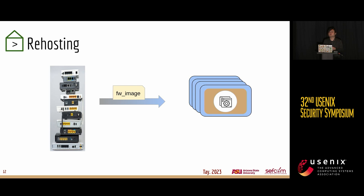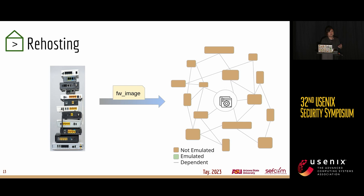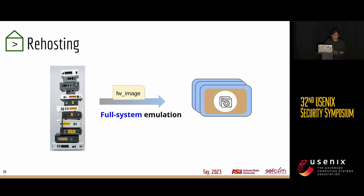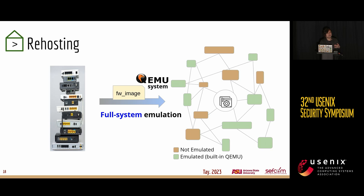Usually when we're trying to re-host a firmware image, we are targeting certain services — usually web services — that provide vectors for us to remotely interact with a given firmware image. These web services tend to depend on a wide array of scripts, libraries, peripherals, kernel modules, et cetera. In order to get a firmware service re-hosted, we must first emulate each of these supporting components such that the service behaves similarly to its original device. Usually what one would do is make use of full system emulation using a general-purpose OS-level emulator like QEMU system, as these emulators tend to come with many of the components you need already built into the emulation itself.